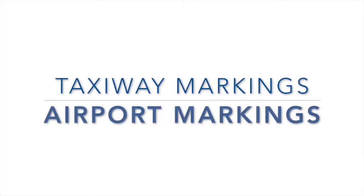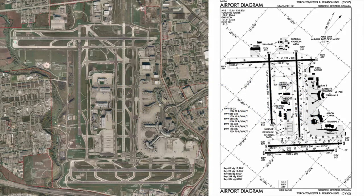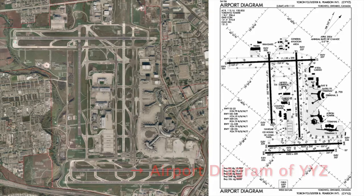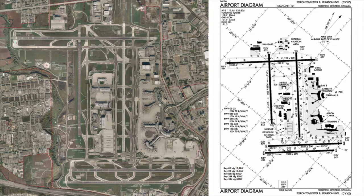This video covers crucial information about taxiway markings in major airports. On your screen to the left is a bird's-eye view satellite picture of Toronto Pearson Airport in Ontario, Canada. You can clearly see that there are five runways and several taxiways connecting them. To the right is the airport diagram of Toronto Pearson Airport, and you can see even clearer that there are five runways and a bunch of taxiways.